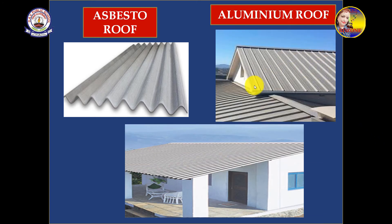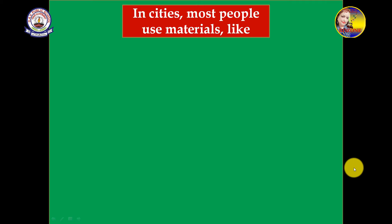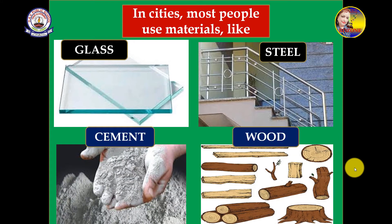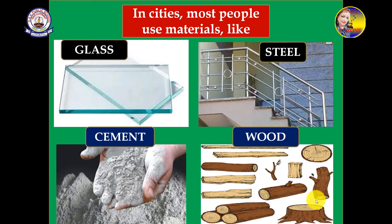People also build with aluminium sheets for the roof. In cities, most people use materials like glass, steel, cement, and wood. Glass is used for window panes and shopfronts. Steel is used for staircases and gates. Cement is used to make the permanent structure of the house. Wood is used in different parts like doors, windows, and inside cupboards.